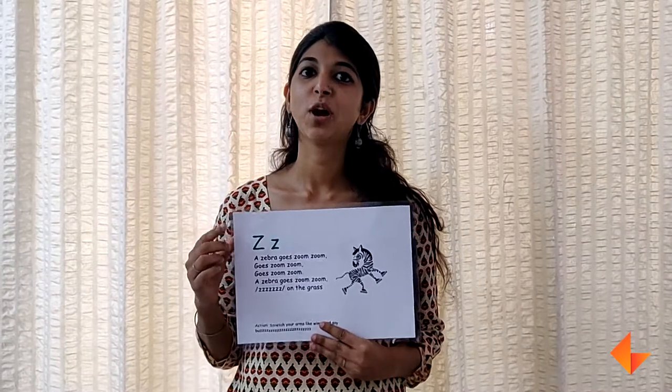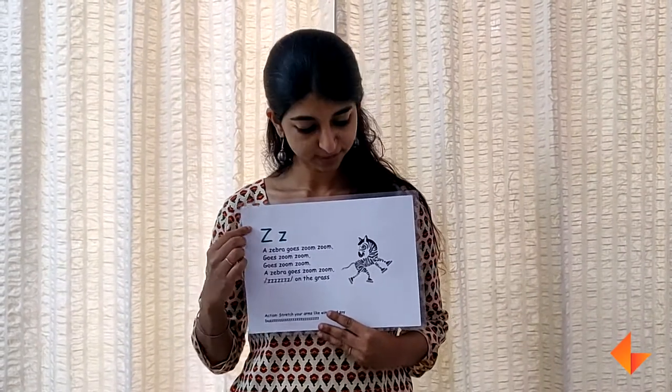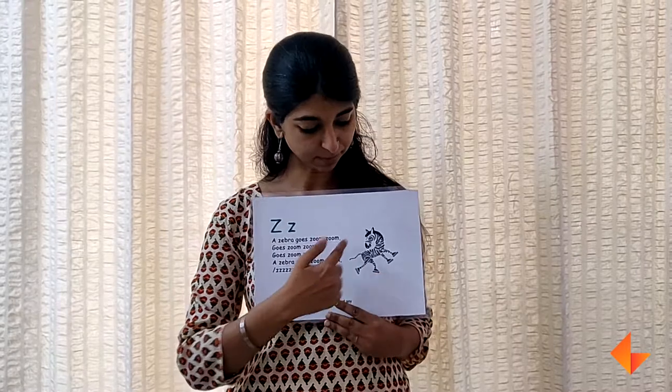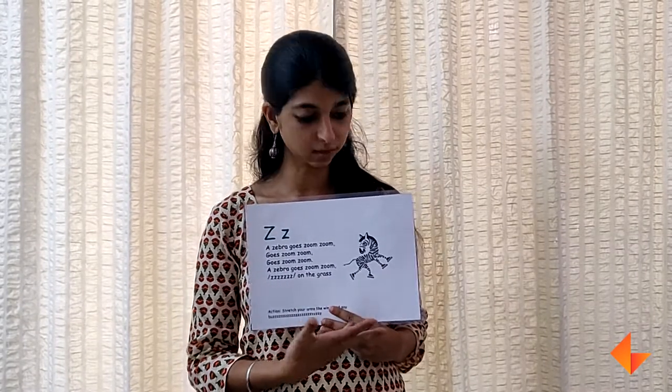Today I will teach you how to use the final star to teach the letter Z. We will start by talking about the picture. Ask children which animal they see here — they see a zebra.